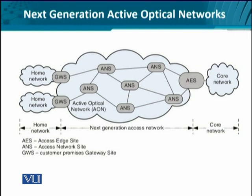Let's look at the overall network of how the AON is going to look. If you look at the inside, we have the next generation access network and we have a home network. The access network looks like a mesh, and indeed it is a mesh. Here we have different access network sites, meaning each of these is a network with users connected to it. All these are connected in a mesh formation. On the right hand side we have the core network.